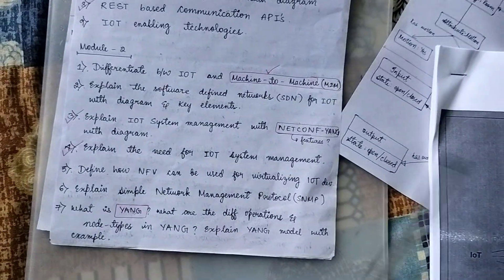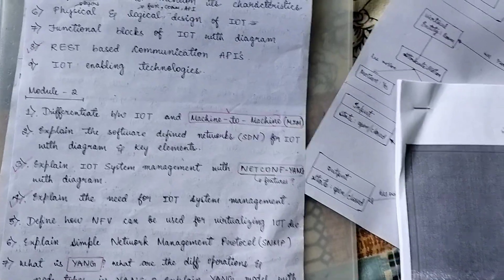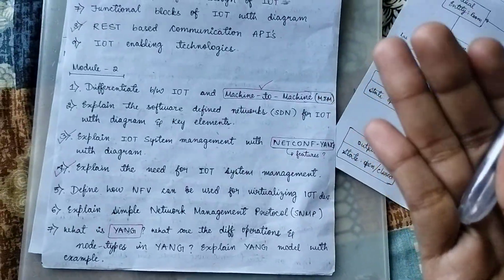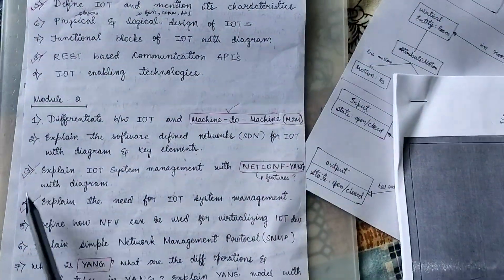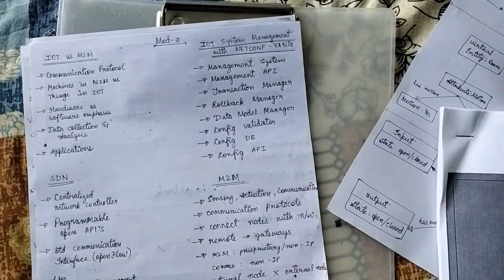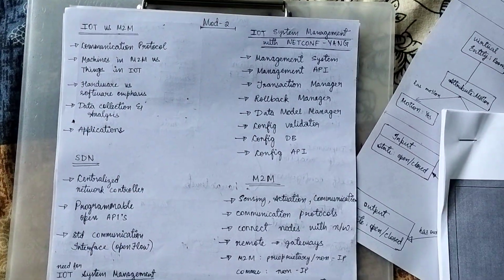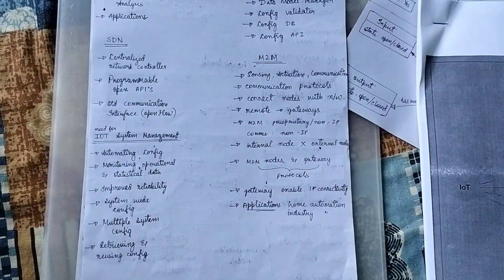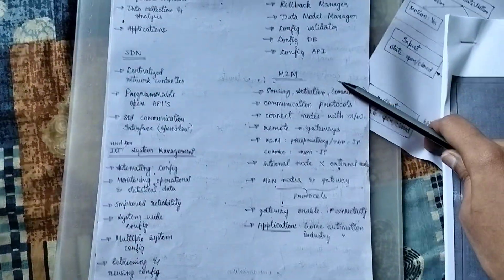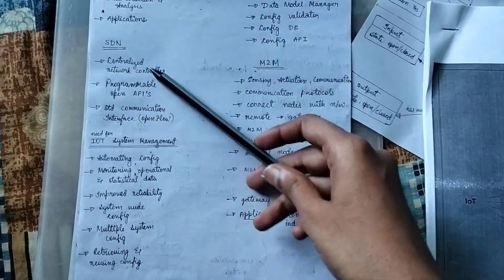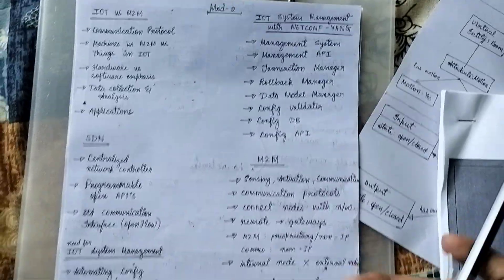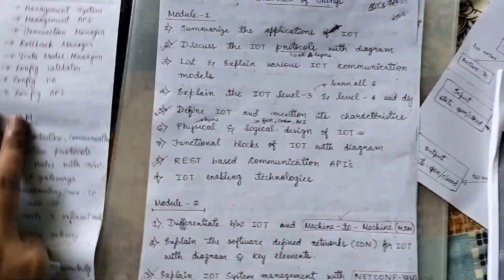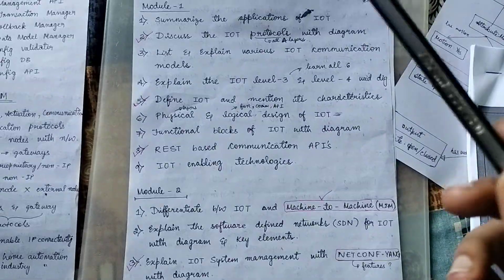I'm not learning the code part for anything - I just can't. Need for IoT system design - all questions marked in red I'm gonna learn. This is like a mind map with everything about M2M and SDN, only three points. Need for IoT system design and those two topics.